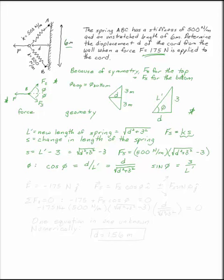Now F is minus 175 newtons in the J direction. Each force in the spring, each spring force is going to be our magnitude Fs times cosine phi in the I direction, and then plus or minus Fs sine phi in the J direction, depending upon whether you're going up or down.